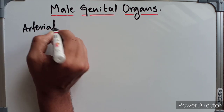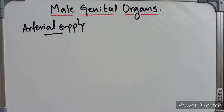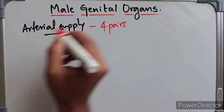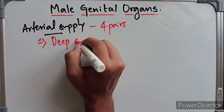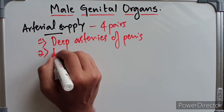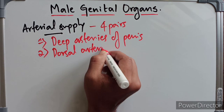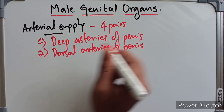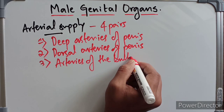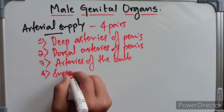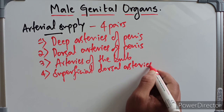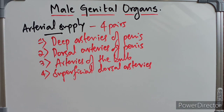Arterial supply. What are the principal arteries that are supplying the penis? The penis is supplied by four pairs of arteries. The first one is the deep arteries of the penis, then we have the dorsal arteries of the penis, then we have the arteries of the bulb, and finally we have the superficial dorsal arteries.